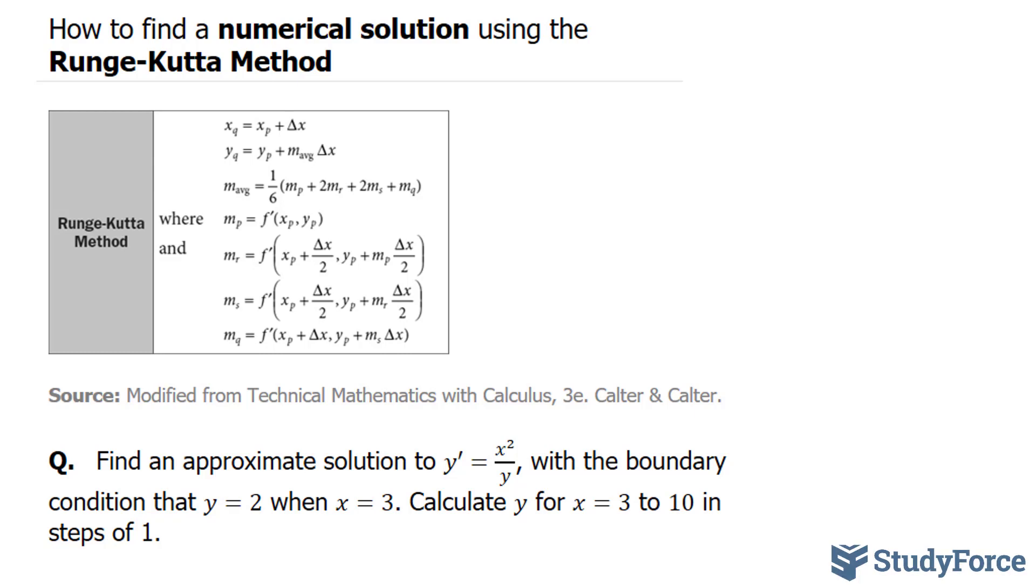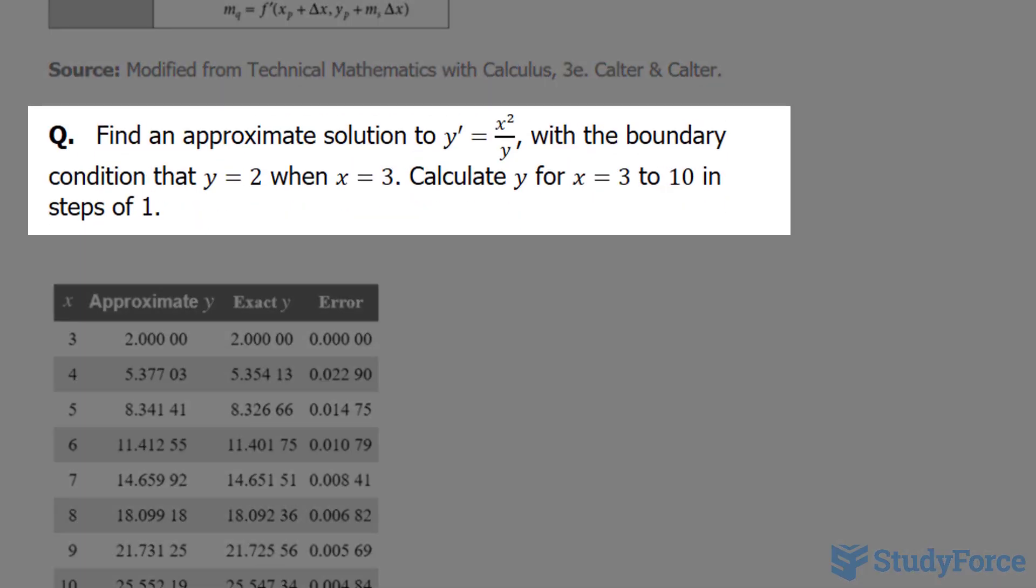The Runge-Kutta method is shown right here, all the formulas that we need, and the question reads: find the approximate solution to y' = x²/y with the boundary condition where y = 2 when x = 3. Calculate y for x = 3 to 10 in steps of 1.